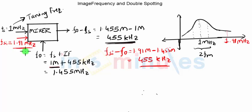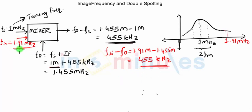No doubt the strength of the signal coming from 1.91 megahertz will be very small compared to the signal coming from 1 megahertz, but it will also get amplified. When we observe the sound output at the speaker, we will hear a lot of noise which is coming from the 455 kilohertz output of the 1 megahertz path, but at the same time we will also listen to a valid information signal coming from 455 kilohertz of 1.91 megahertz. So you will listen to a mixture of noise and a valid radio station at 1.91 megahertz.